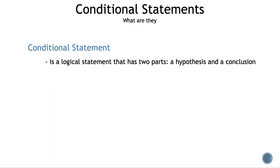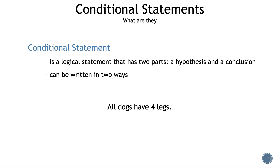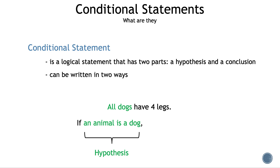Let's add to the definition of a conditional statement. It can be written in two different ways. Take the example: 'All dogs have four legs.' This is one way. The other way is if-then form. We take the subject, 'all dogs,' and rewrite it as 'an animal is a dog,' and put it after the word 'if.'